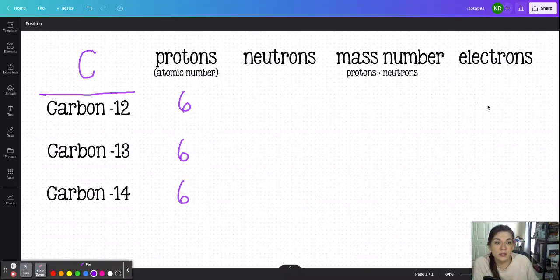Now, this is also going to be true for the electrons. Each of these, because we are assuming that they are neutral atoms, they are going to have the same number of protons and electrons. So for that reason, they'll all have six electrons.